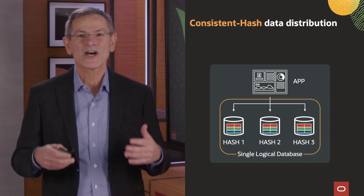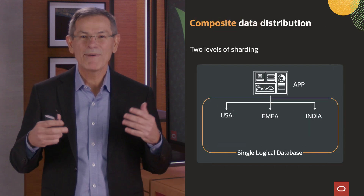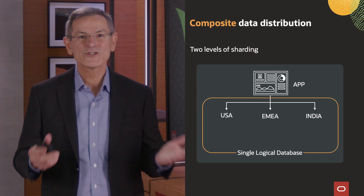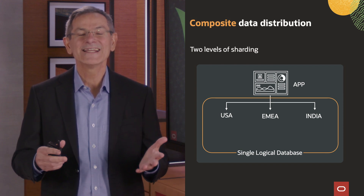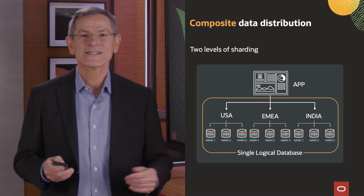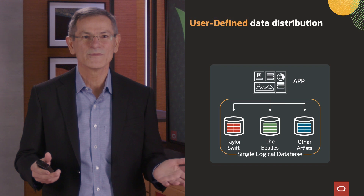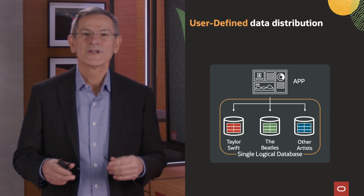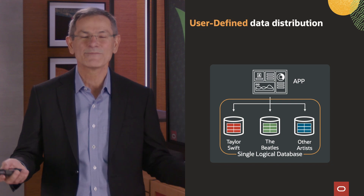Consistent hash enables online addition of shards with minimal data movement. Oracle supports composite data distribution, a form of two-level sharding where data is first distributed by values such as country or by range like phone number, and then also distributed evenly across data centers using consistent hashing — for example, by customer ID. In addition, Oracle supports user-defined data distribution, used when data requires special handling such as skewed data. For example, you can store Taylor Swift and Beatles data in their own shards and lump smaller artists' data together in a separate shard.